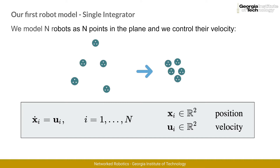According to this model, the configuration of the robot is completely described by its position, x, and the variable that we can control is its velocity, v. The model says that the derivative of the position is equal to the velocity that we impose on the robot.